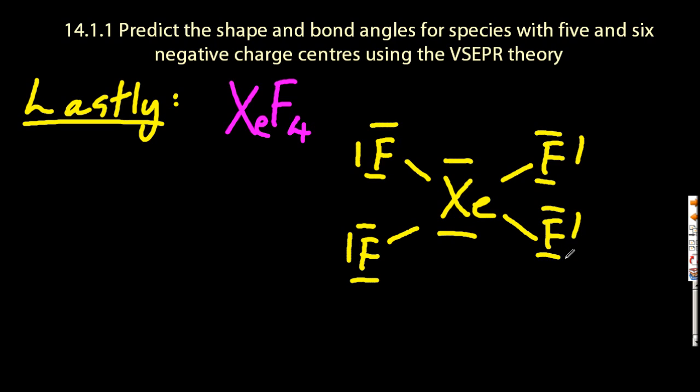So xenon is now stable with 12 electrons around its center, which, again, is unusual. Normally, we're expecting eight or two. But this is higher level.